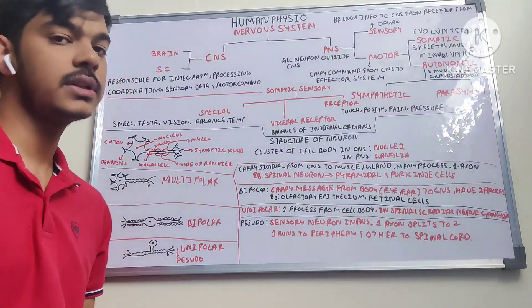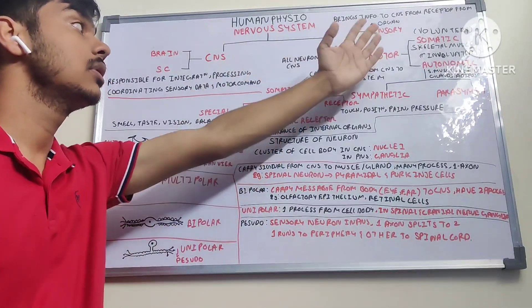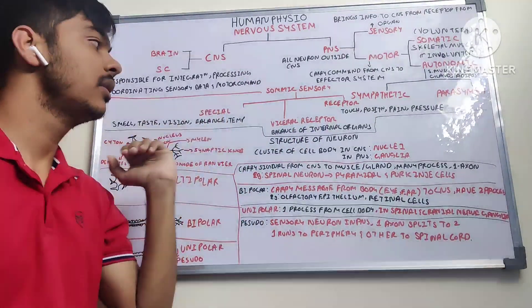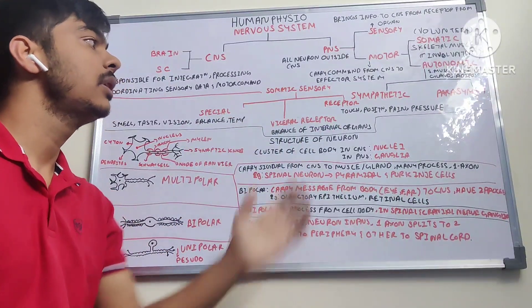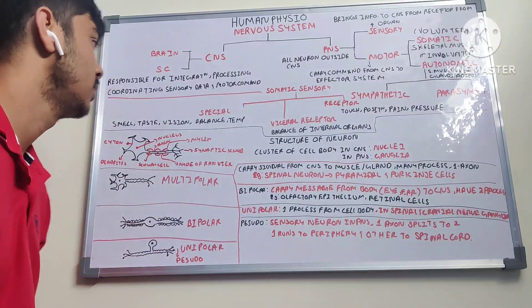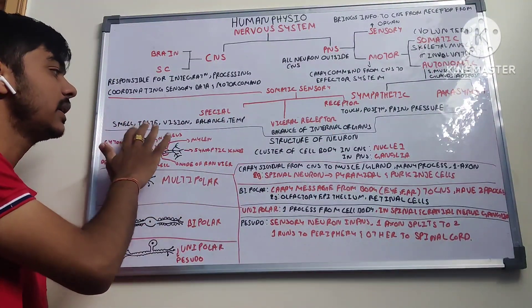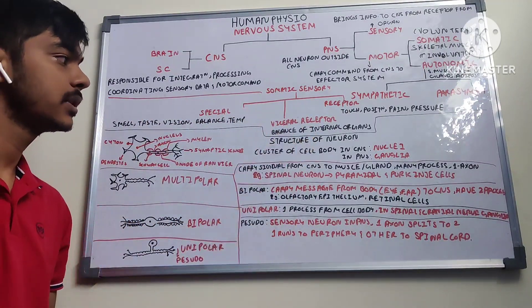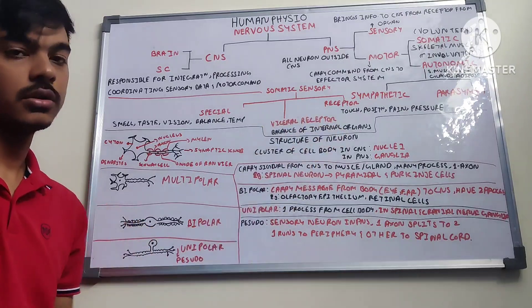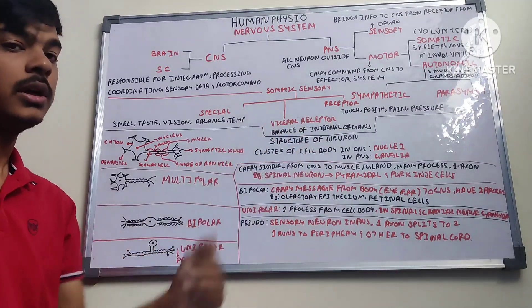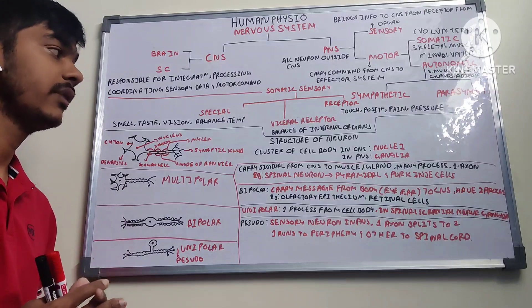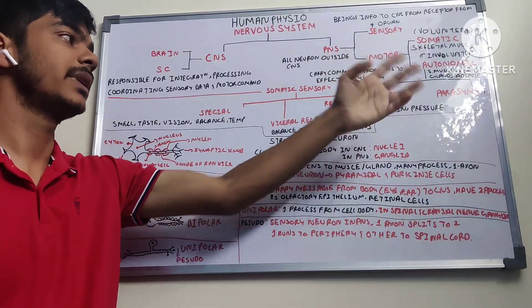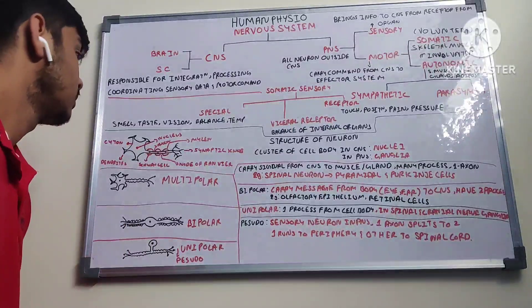The sensory part has three divisions: the somatic sensory, special sensory, and visceral receptors. Special sensory has functions like smell, taste, vision, balance, and temperature. The visceral receptors monitor the internal conditions of organs — keeping everything in check. The somatic sensory receptors cover touch, position, proprioception, pain, and pressure.